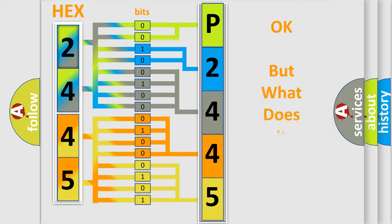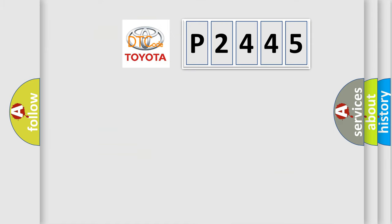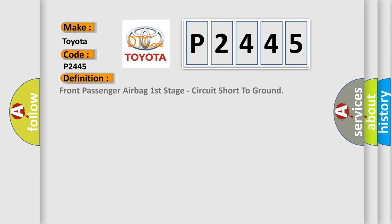We now know how the diagnostic tool translates received information into a more comprehensible format. The number itself does not make sense to us if we cannot assign information about what it actually expresses. So, what does the Diagnostic Trouble Code P2445 interpret specifically for Toyota car manufacturers? The basic definition is: Front passenger airbag first stage, circuit short to ground.